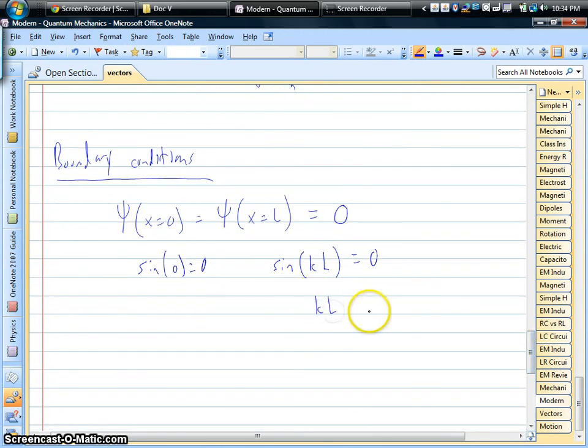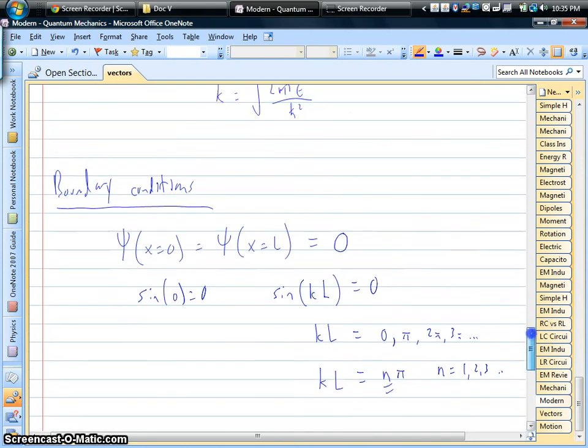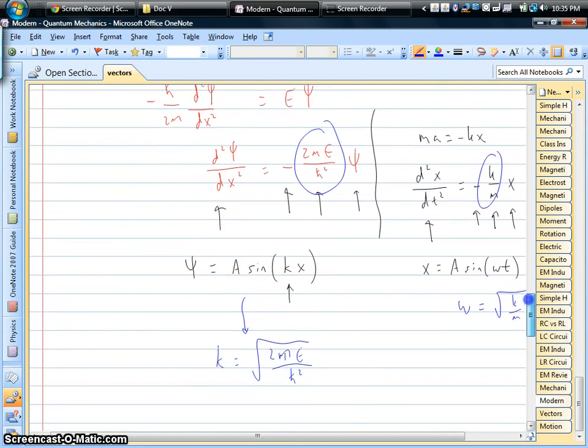But at the other wall, our constant times L, if that's our x position, that also has to be zero. So think about where is sine zero? That means KL, these constants in there, has to be zero, or pi, or two pi, or three pi, and so on. In other words, k times this length between the walls is an integer times pi. That's the quantum number. There's an integer. An integer is part of our solution to this particular problem of an electron bouncing between walls.